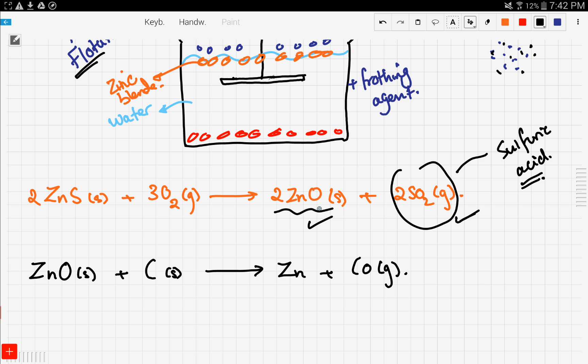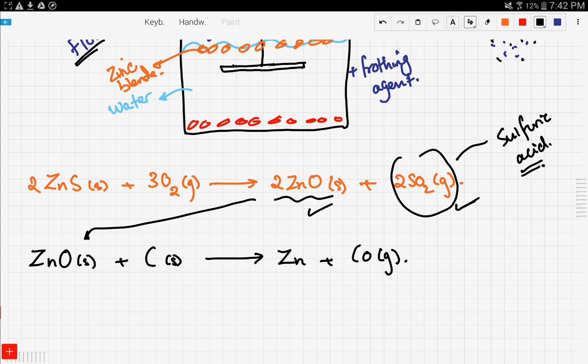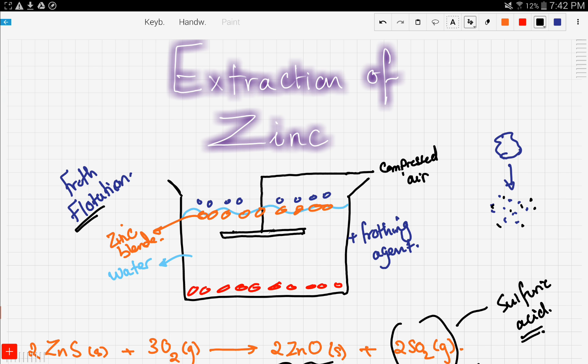Now, the zinc oxide is taken and we use it in a hot blast furnace and reduce it using coke. So here is the reaction between zinc oxide and coke. This would give us zinc and carbon monoxide gas. So that's it for the extraction of zinc.